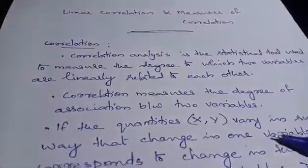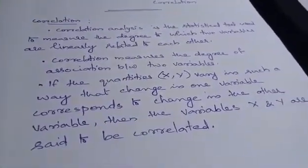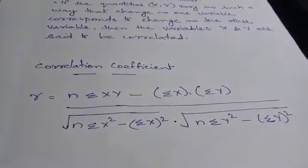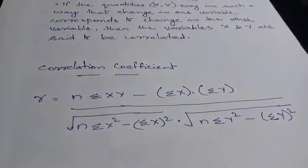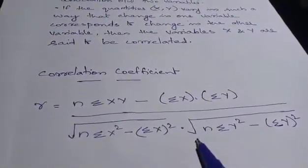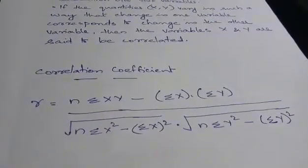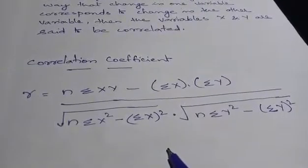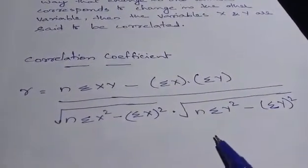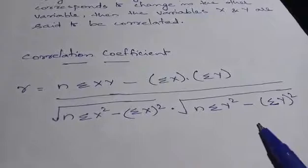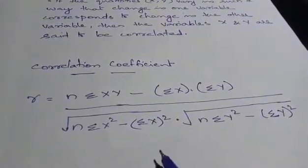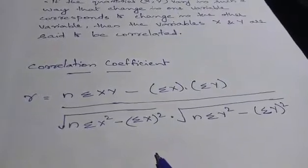Just go through this theory portions and you are having a formula for finding the correlation coefficient. The formula is this one: R is equal to n into sigma xy minus sigma x into sigma y divided by square root of n into sigma x square minus sigma x the whole square into square root of n into sigma y square minus sigma y the whole square. This is the formula to find correlation coefficient.